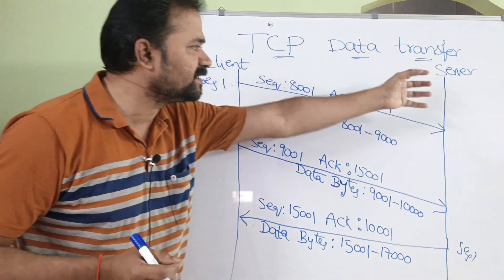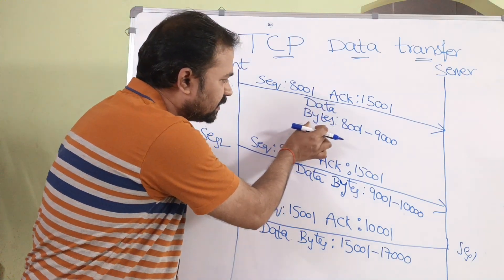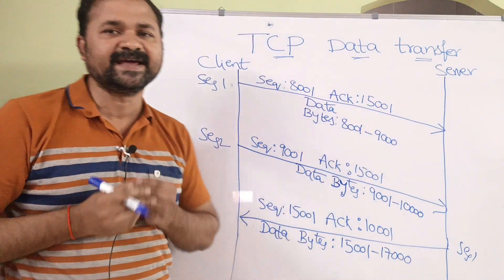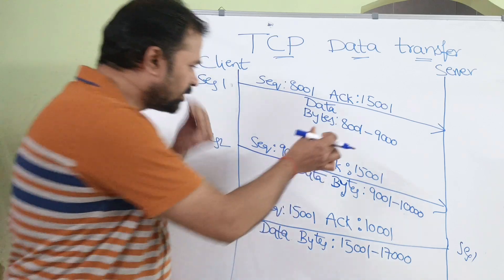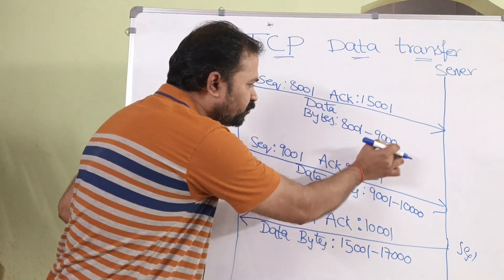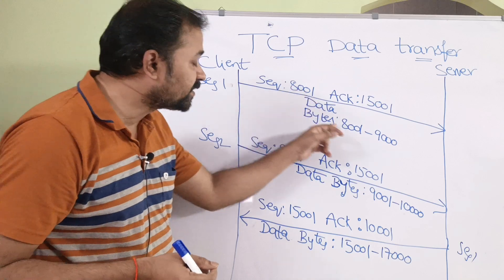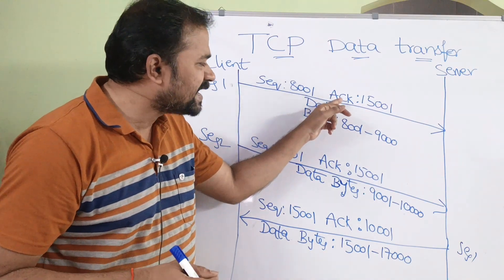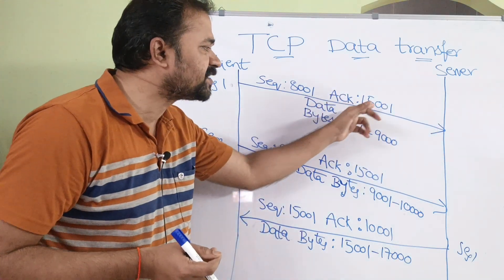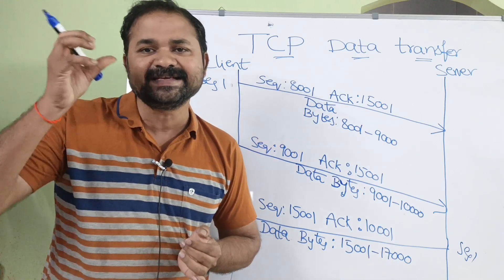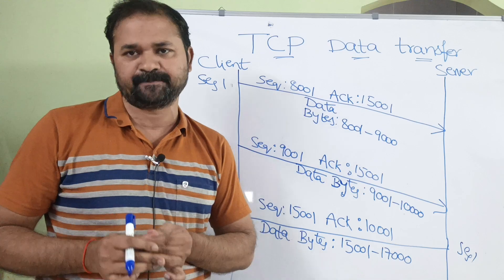Initially, the client is sending a segment to the server where the data contains bytes from 8001 to 9000. The sequence number is the first byte of the segment, so here the sequence number is 8001. The client is also expecting byte 15001 from the server, so the acknowledgement is 15001, specifying that the client expects the next segment to start at byte 15001.